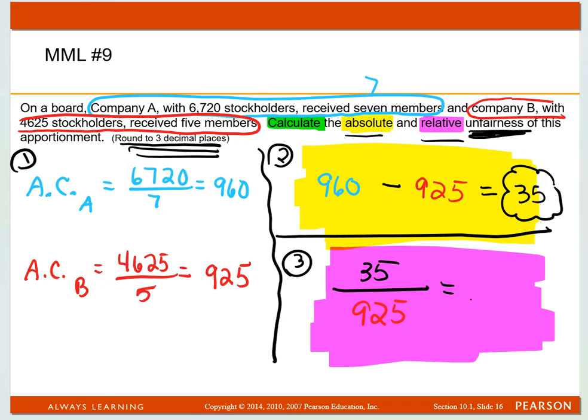So when I do the division and round off, I get 0.038, and that'll be the second answer I put into MyMathLab. So you either get one or two positive affirmations, but that's how you work problem number nine.